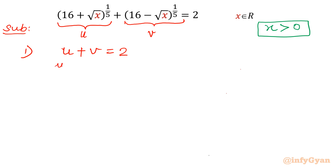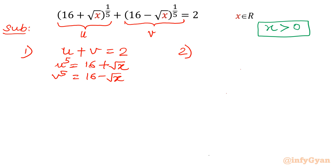Let me write u⁵ directly: u⁵ = 16 + √x. Similarly, v⁵ = 16 − √x. If I add both I get equation number 2: u⁵ + v⁵ = 32, because the √x terms cancel out.